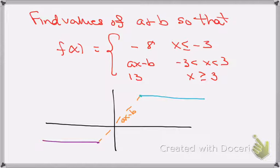ax minus b when x is between minus 3 and 3, and x is greater than or equal to 3, then it's 13. So, if you look at this function,